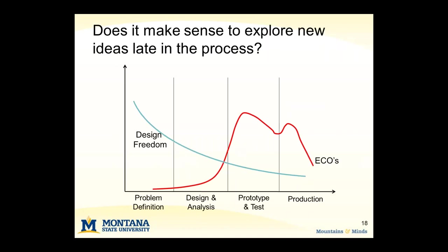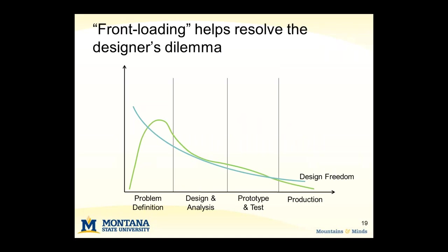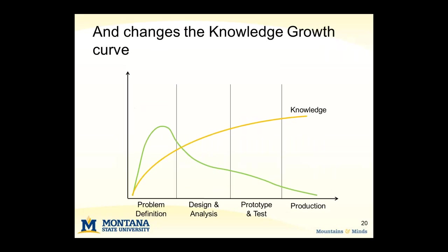Looking at that engineering change order pattern again, it seems unwise to be making changes late in the process, because that's when we've made the most decisions and have the least design freedom. Wouldn't it make more sense to do that exploration at a point where we have the most design freedom? If we do that, we also have the opportunity to change the curvature of that knowledge growth curve so that we learn rapidly early in the process and can then make hopefully wiser choices.